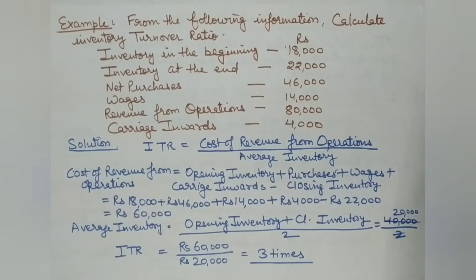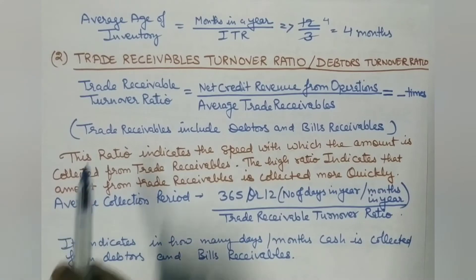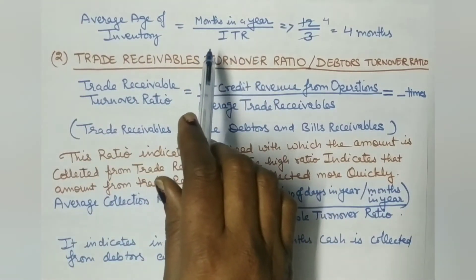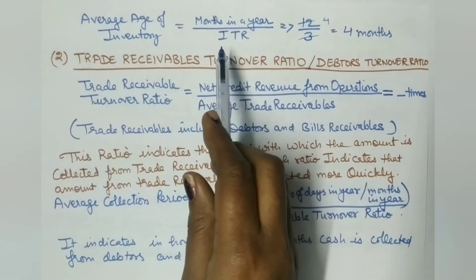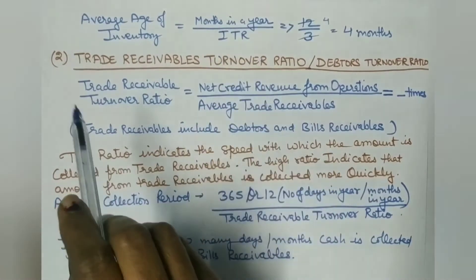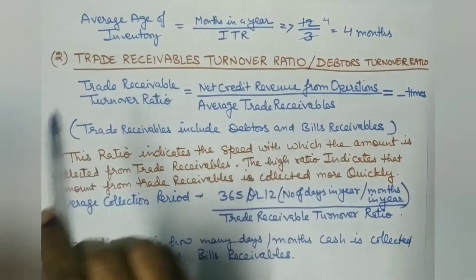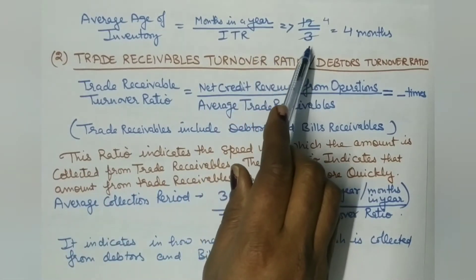An inventory turnover ratio of 3 times means that the stock is sold and replenished 3 times during the year. Now we calculate the average age of inventory. Taking 12 months in a year divided by the inventory turnover ratio of 3, we get an average age of inventory of 4 months.